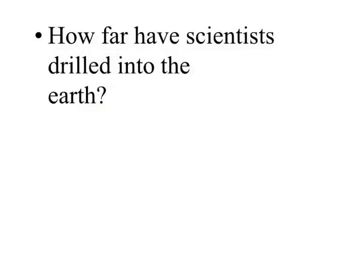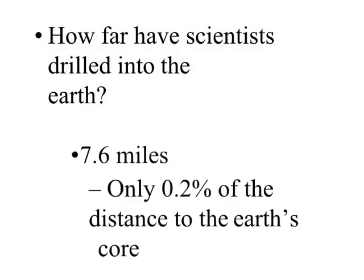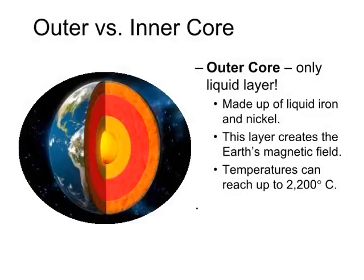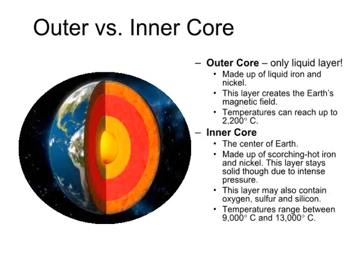How far have scientists drilled into the Earth? Only 7.6 miles — just 0.2% of the distance to the Earth's core. The outer core is the only liquid layer, made up of liquid iron and nickel. This layer creates the Earth's magnetic field, and temperatures can reach up to 2,200°C. The inner core, the center of the Earth, is made up of scorching hot iron and nickel. It stays solid due to intense pressure, and may also contain oxygen, sulfur, and silicon. Temperatures range between 9,000°C and 13,000°C.